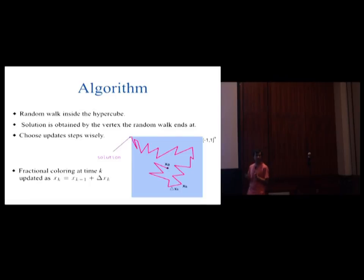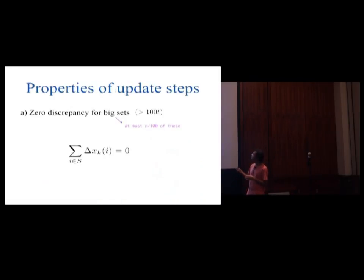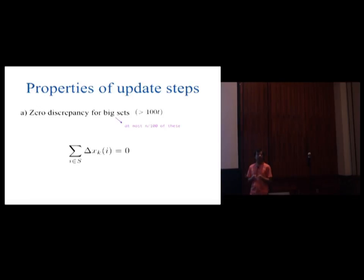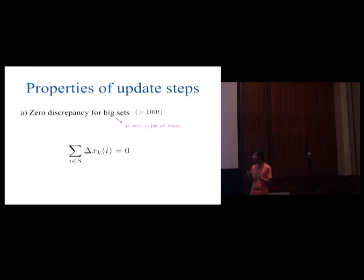The first property is that big sets — which have more than 100T points in them — should get a discrepancy of 0. You cannot have too many big sets: since each point lies in T sets and a big set contains 100T points, you can only have at most n divided by 100 big sets. Giving 0 discrepancy to so few sets is feasible. This means from now on you only need to worry about sets of size smaller than 100T.